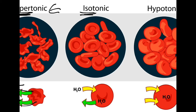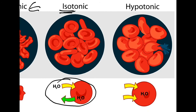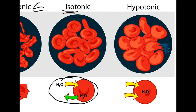In an isotonic solution — 'iso' meaning the same — the solute concentration inside and outside the cell is equivalent. IV solution is a good example of an isotonic solution. Because concentrations are balanced, water exchange is even and the cell won't shrink. In a hypotonic solution, like placing a cell in distilled water which has no solutes, there are more solutes inside the cell than outside.